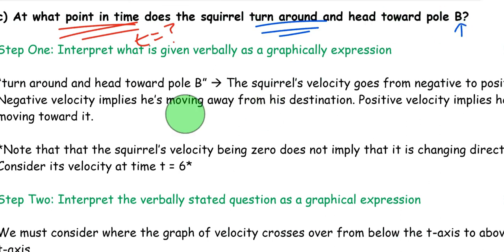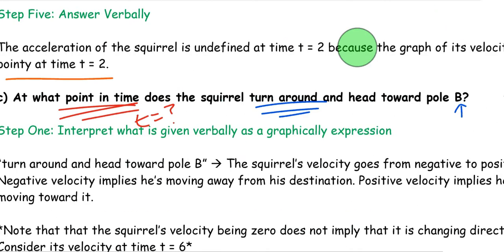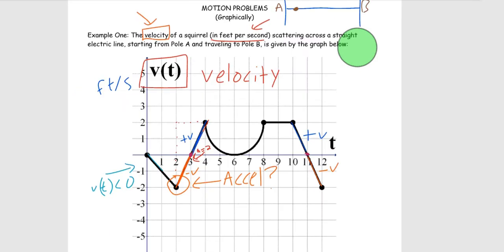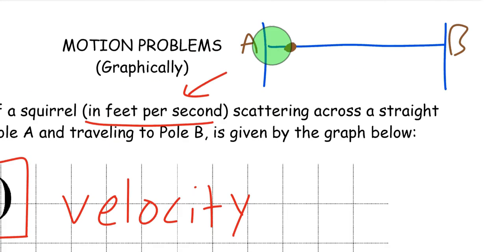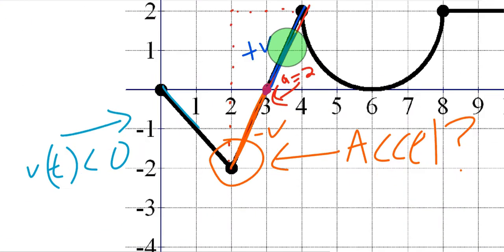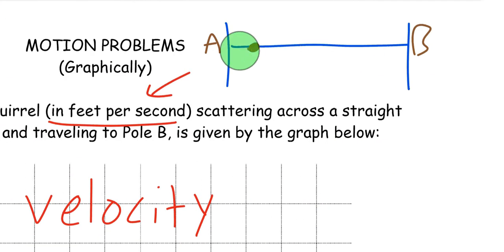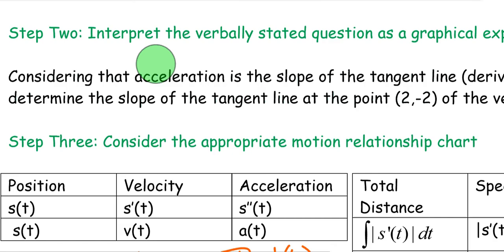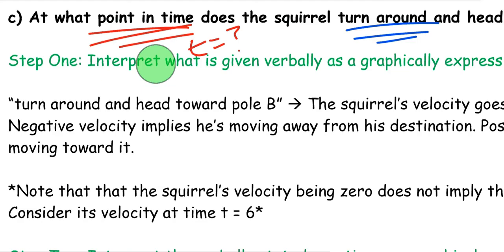In the graph I showed you two places where it turns around, but in the question it's actually just asking when does it start heading towards pole B? Going back to the illustration I originally drew, at what point in time does the squirrel actually start doing this? Because we already said initially its velocity is negative. So initially the squirrel starts going this way.